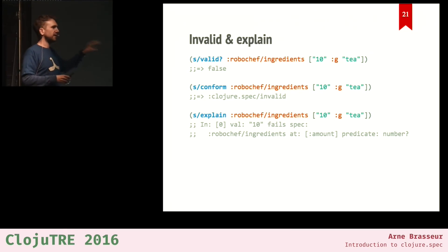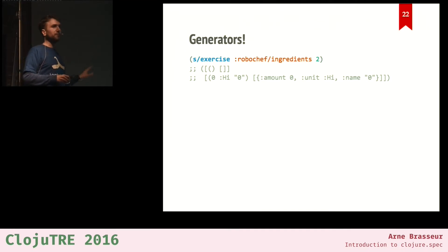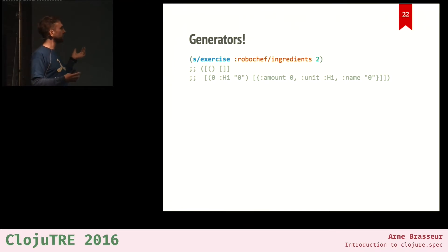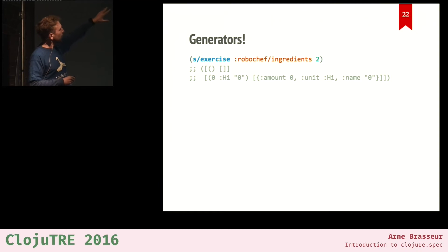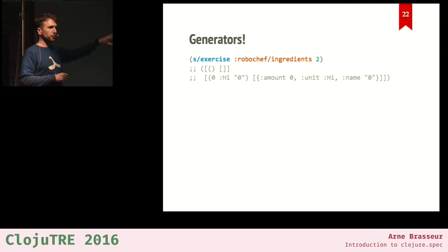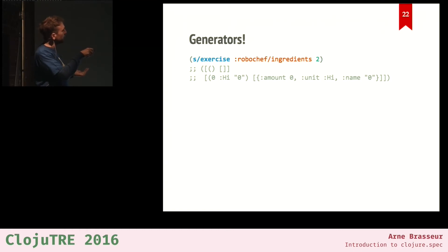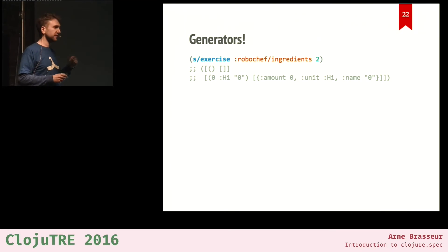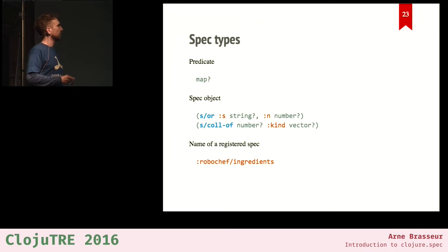There are also variants of explain that return pure data or a string instead of printing. Now what's really cool is that you can also use specs to generate data. There's an exercise function in the spec namespace — here I'm telling it to generate two ingredient lists. It returns a sequence of pairs: the first item is the generated data, the second is the generated data conformed. You can generate an infinite amount of valid data and run that through your tests.